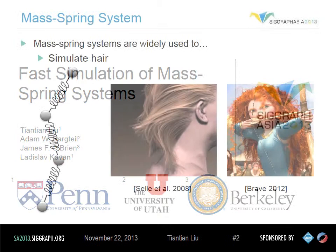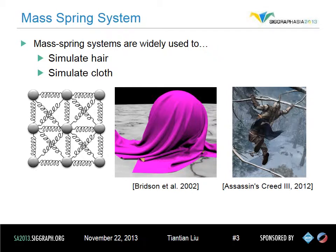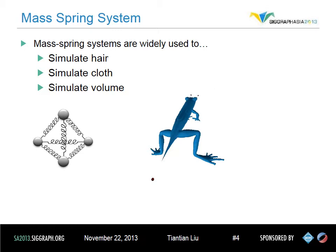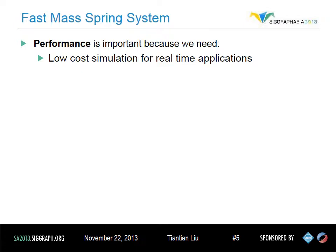Mass Spring Systems are widely used in physically-based simulations. For example, we can link the vertices on a 1D strand together to simulate vivid hair motion. Or we can set up a connectivity graph of a 2D thin shell and use it to simulate lots of fancy secondary effects of cloth. We can also approximate volume conservation properties of a material by replacing the edges of tetrahedra with springs, so that we can simulate a virtual animal very easily.